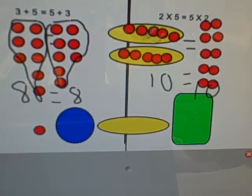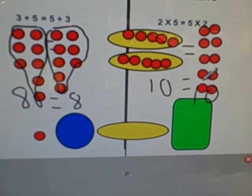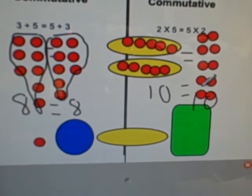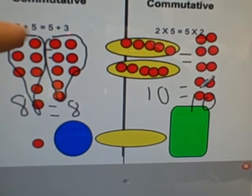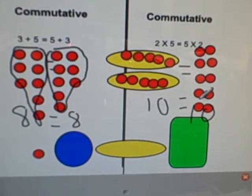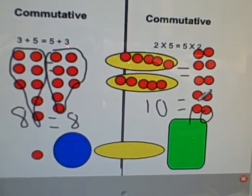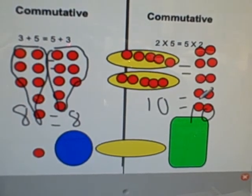So 2 times 5 is the same as 5 times 2. And that's the commutative property. It shows that regardless of the order, for multiplication or addition, you can flip the numbers around and you'll still get the same answers in your equation.